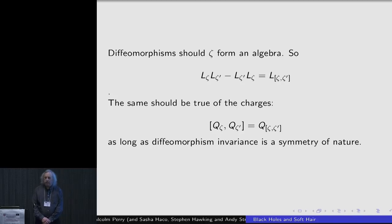These zetas are just general diffeomorphisms, and the diffeomorphisms form a closed algebra, and so you know that the Lie derivative of the Lie derivative is going to close and give you the Lie derivative of the commutator of two vector fields. That's a general result that you would expect just from the idea of coordinate invariance. That should be reflected in the algebra of charges, so that if you took the bracket, meaning the Dirac bracket of two charges, one associated with zeta and one associated with zeta prime, then as long as diffeomorphism invariance is a symmetry of nature, you would expect to get the charge of the commutator of two of these zetas. And that's fine, as long as diffeomorphism invariance is a symmetry of nature.